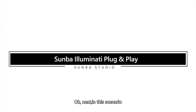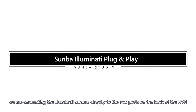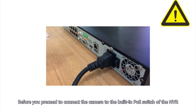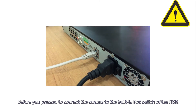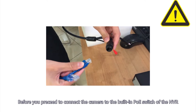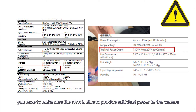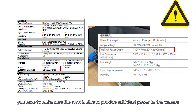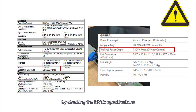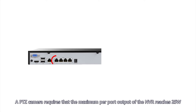Next, in this scenario we are connecting the Illuminati camera directly to the PoE ports on the back of the NVR. Before connecting the camera to the built-in PoE switch, you have to make sure the NVR can provide sufficient power to the camera by checking the NVR specification.